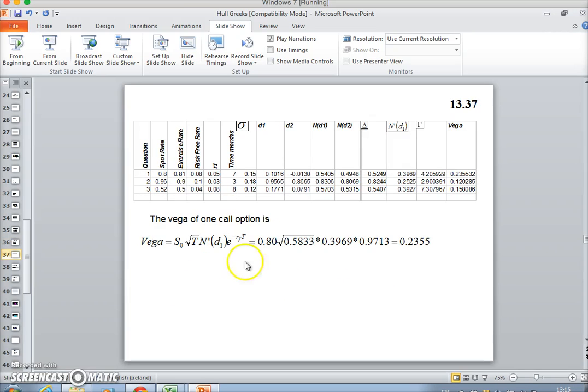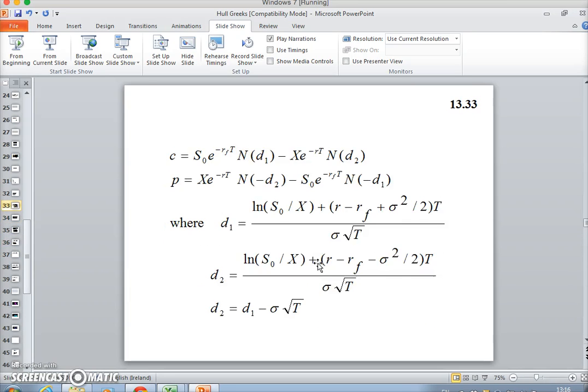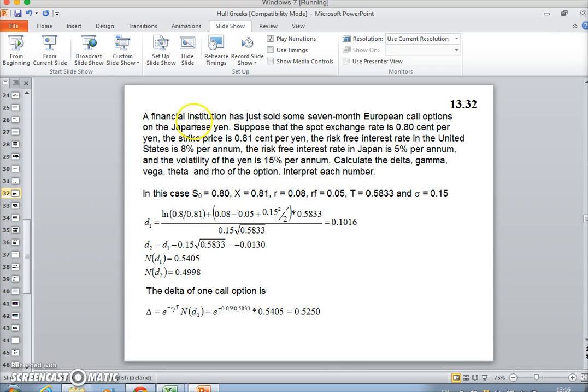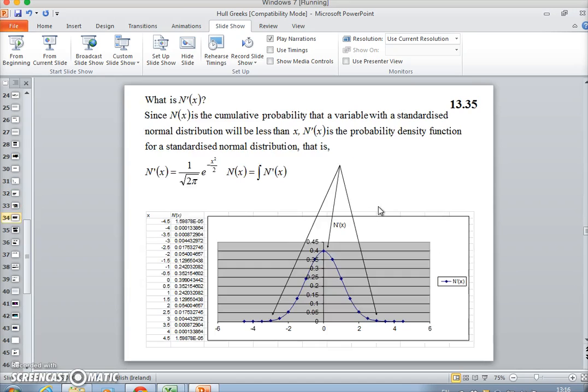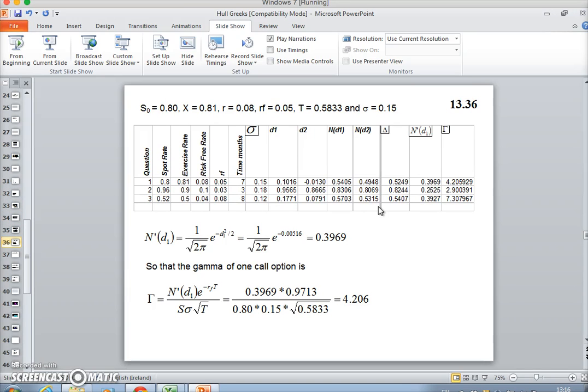Then we estimate vega. Vega is S times the square root of T, and again the probability density function is being used. If we input our parameters—the parameters are what was initially given, we've taken them from here, the narrative—these are parameter inputs, and we can see the value.